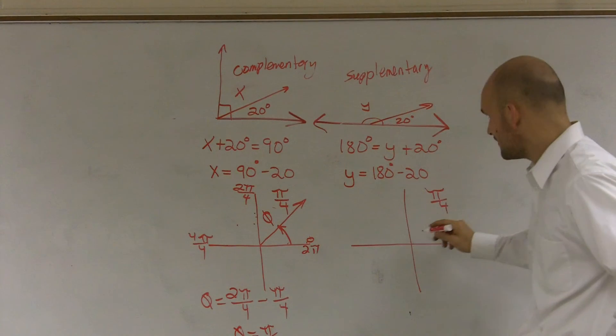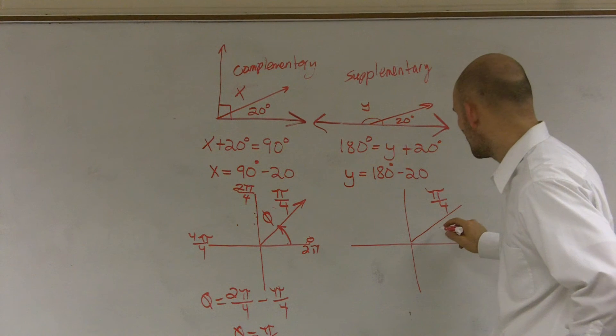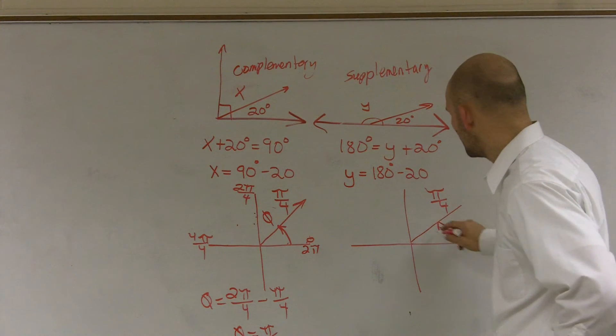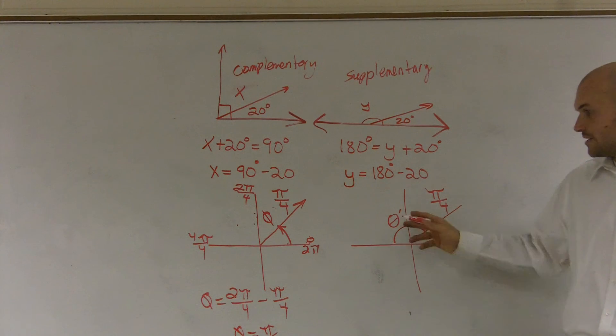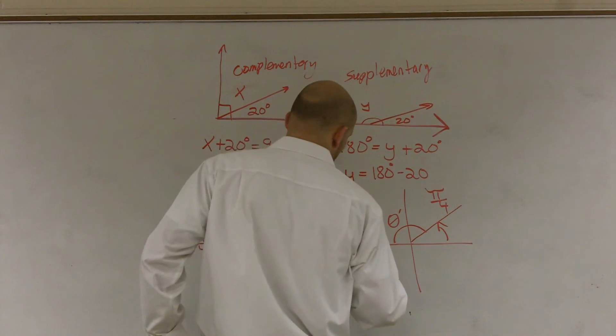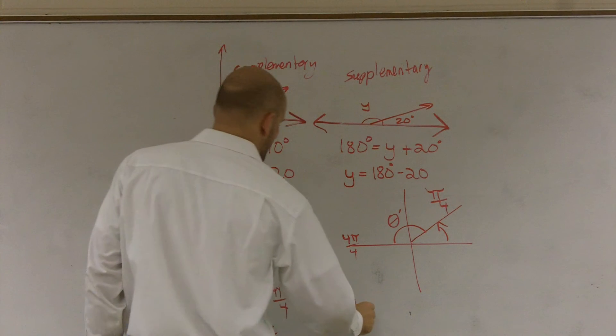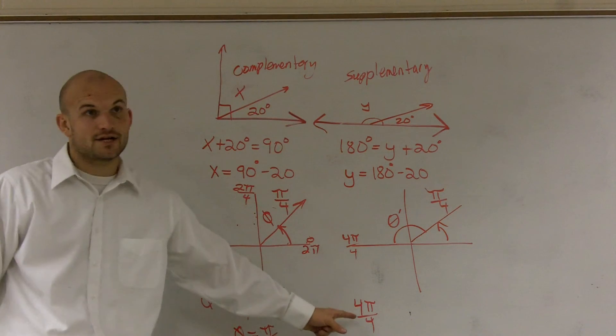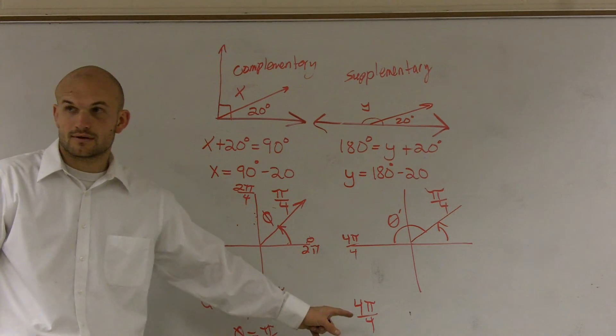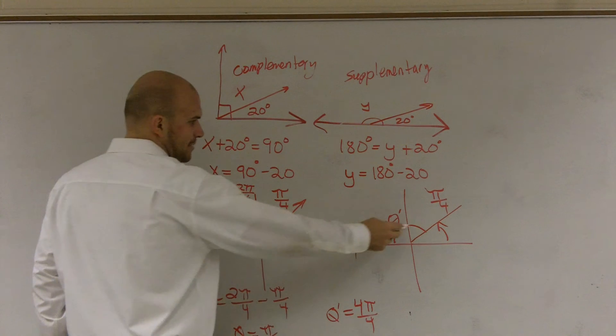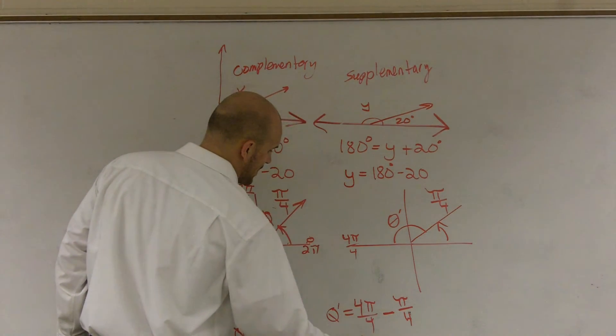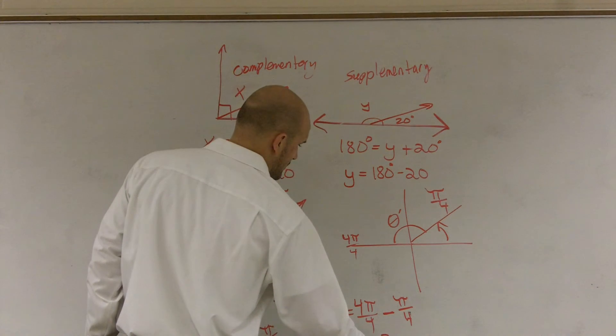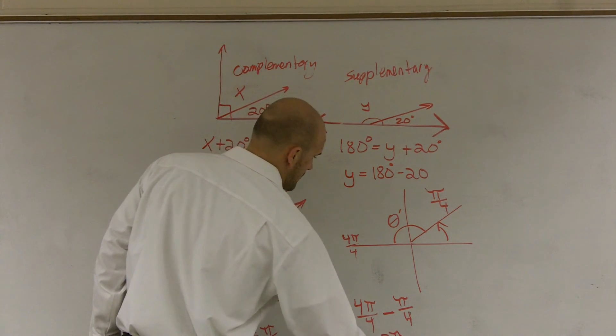So then over here, if I have my pi over 4, is right there, and now I need to figure out this angle, which I'll just call theta prime. So if I want to find theta prime, again, remember, you say 180. Well what was 180? 180 is over here, which is 4 pi over 4. So I'll say 4 pi over 4. That's 180 degrees in radians for this problem. So I can say theta prime equals, because theta prime is this angle, 4 pi over 4 minus pi over 4. So therefore, theta prime equals 4 pi over 4 minus pi is going to be 3 over 4.